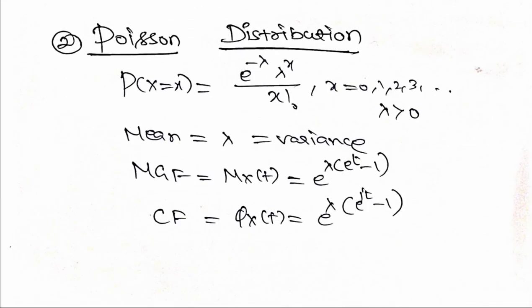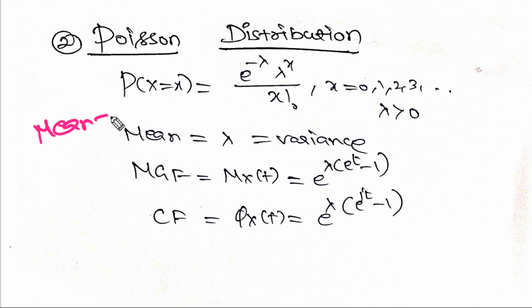The Poisson distribution is a very important distribution. Its probability mass function is: P(X=x) = e^(−λ) · λ^x / x!, where x = 0, 1, 2, 3... and λ > 0. The mean and variance are both defined in discrete terms.